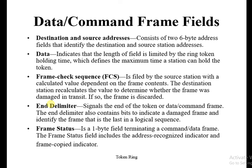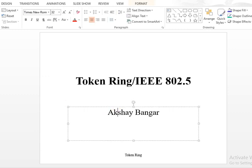The frame check sequence (FCS) is very important in the token ring frame format. It is filed by the source station with a calculated value depending on the frame content. The destination station recalculates the value to determine whether the frame was damaged in transit; if so, the frame is discarded. The frame status field is a 1-byte field indicating the address recognized indicator and the frame copied indicator.